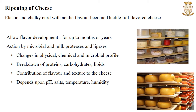During cheese ripening, there will be breakdown of proteins, carbohydrates and lipids, resulting in contribution to flavour and texture. The development of flavour and texture also depends upon the pH, presence of salts, temperature, humidity and composition of cheese. The proteases and peptidases from the starter culture and rennet release free amino acids such as glutamic acid and leucine, which contribute to the cheese flavour.